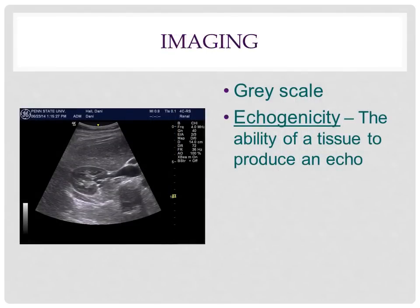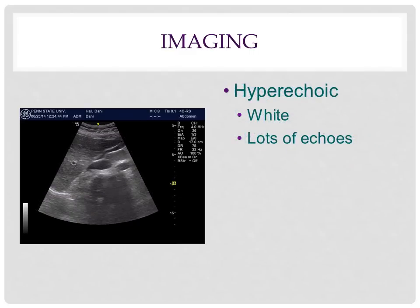Ultrasound imaging is also known as grayscale imaging because the images appear in different shades of gray. There are varying levels of gray, from white to black, and these levels are called echogenicities. Echogenicity is the ability of a tissue to produce an echo. We see these differences due to the structure or tissue that the sound waves are bouncing off from. If a structure is highly echogenic, it will produce a lot of echoes. The structure will appear white, and we would call the structure hyperechoic. Connective tissues, bone, and tendons are examples of hyperechoic structures in the body. Observe in the image the hyperechoic tissues surrounding the gallbladder and liver.